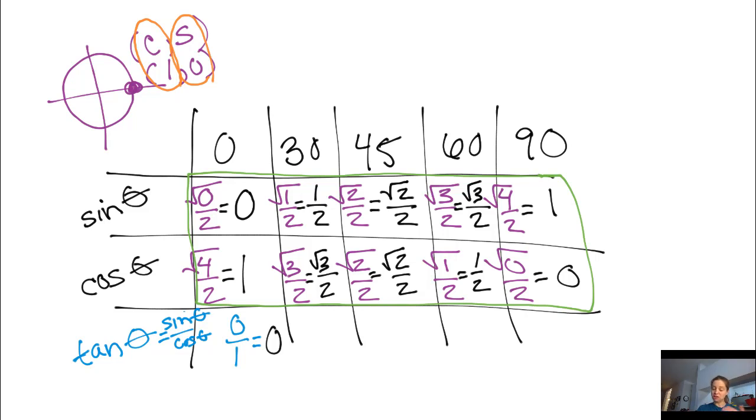So let me do the tangent of 60 degrees, for example. It is the sine of 60 degrees, the square root of 3 over 2, divided by the cosine, which is 1 half. Radical 3 over 2 divided by 1 half is the same as radical 3 over 2 times 2 over 1, which is radical 3. So the tangent of 60 degrees is radical 3.